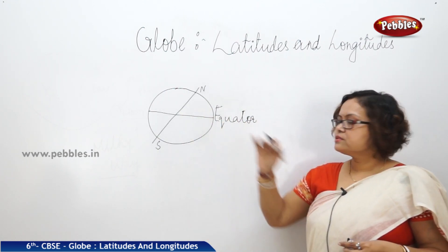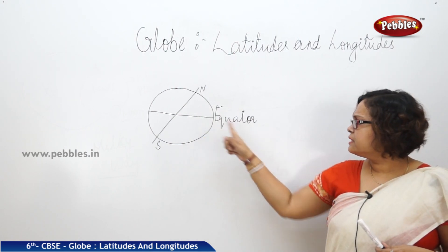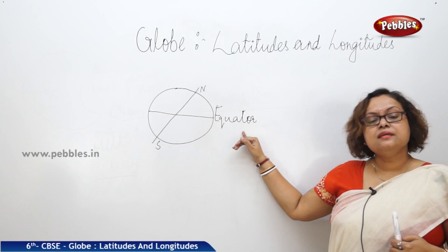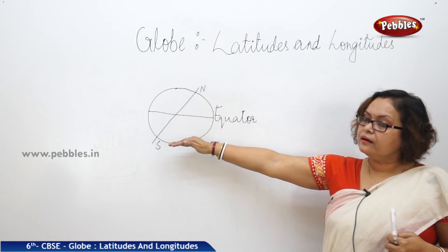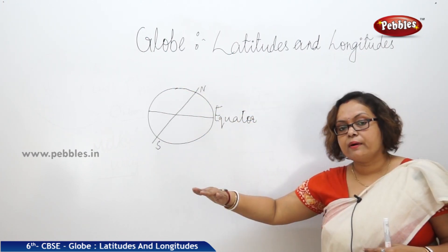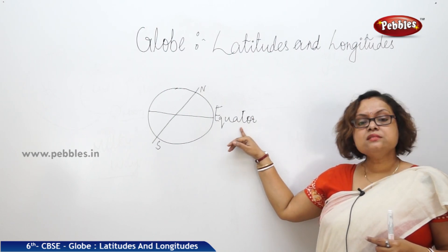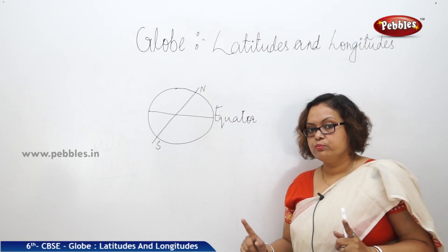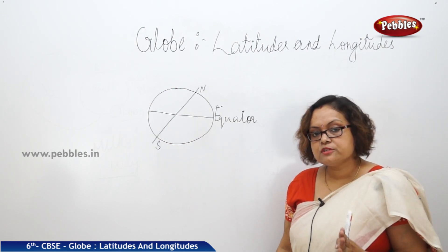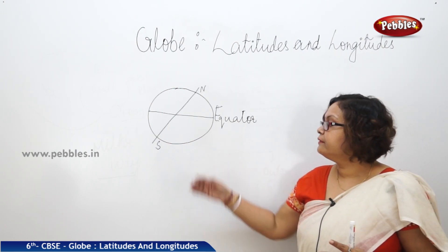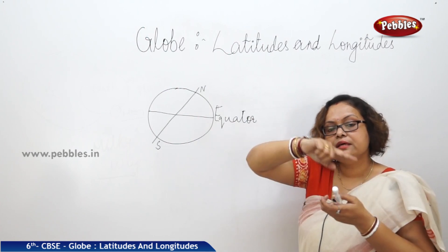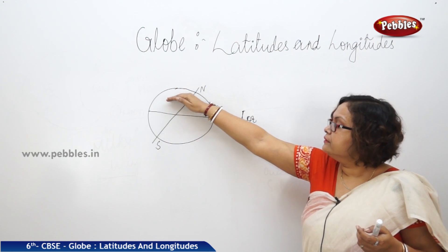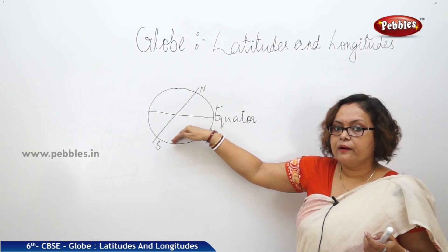This line is known as the equator. What is the meaning of this name? The equator is the line that divides the Earth into two equal parts, so it is known as the equator. If you observe the globe carefully, you will find the equator in the middle of the Earth, dividing it into two parts.